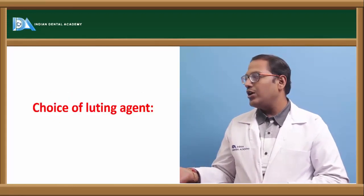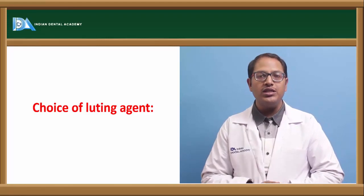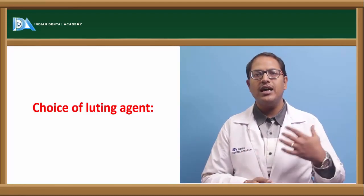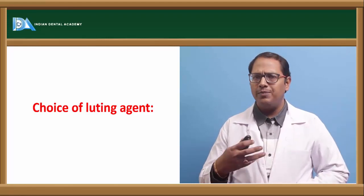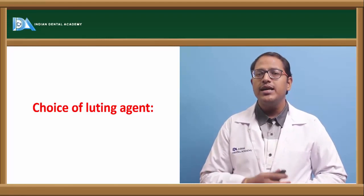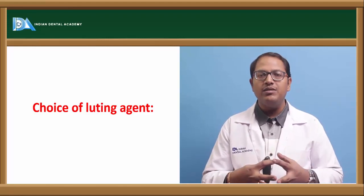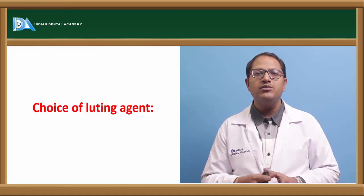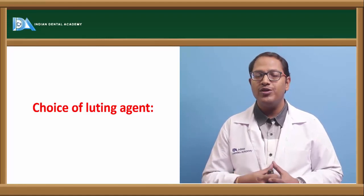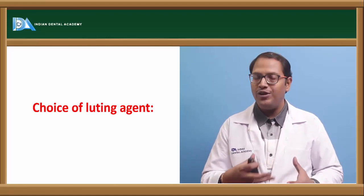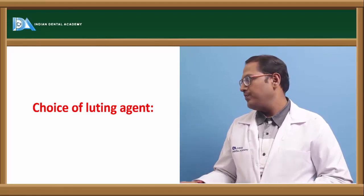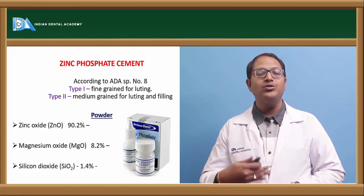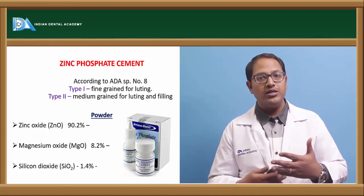Regarding the choice of luting agents, there are temporary and permanent luting agents, as well as active and passive luting agents. Active luting agents actively bind with the tooth structure — like zinc phosphate and GIC. Passive luting agents bind slightly, like temporary restorations using zinc oxide eugenol or eugenol-free zinc oxide cements.